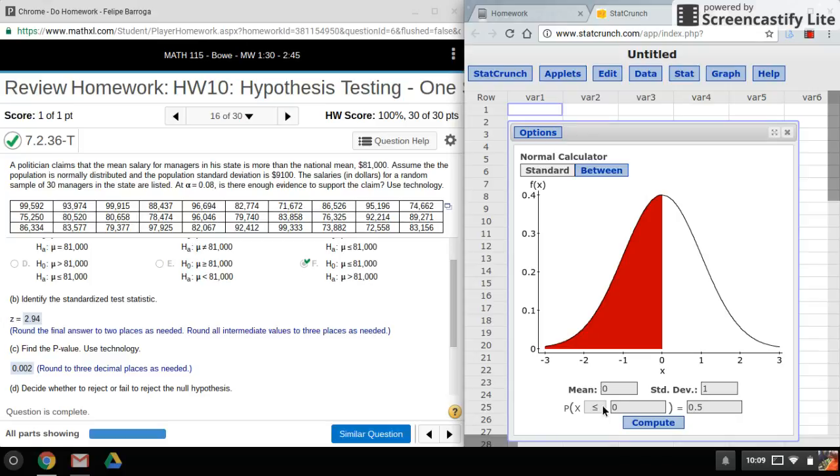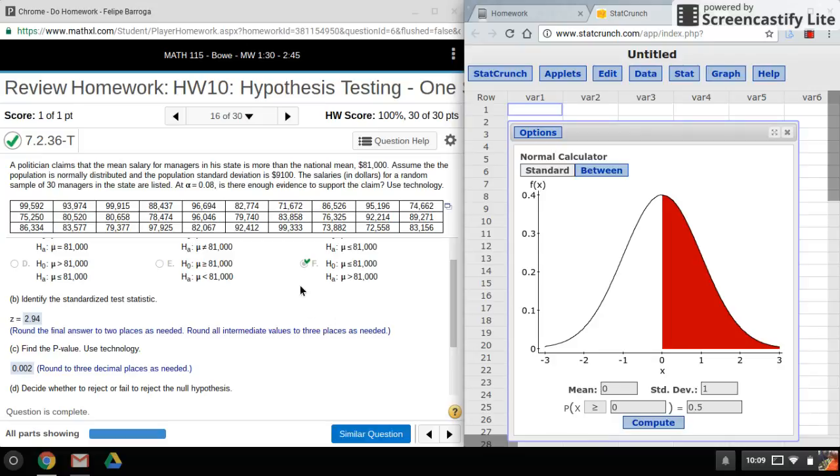So this is greater than, so I'll change this here. And again, we have a population standard deviation, so that's how we know it's a z. So I'm staying on my Normal calculator here. And this time, because it's only one-tailed, I can use alpha, so I'll put in alpha here.